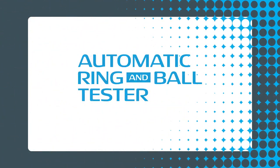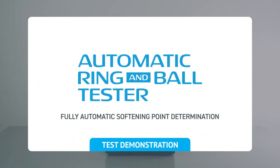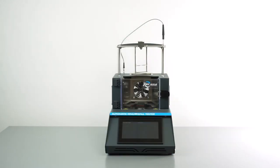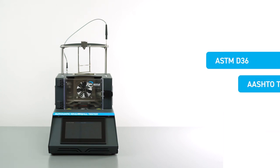How to perform a softening point test with IPC Global's automatic ring and ball apparatus. The procedure followed in this video refers to ASTM D36, AASHTO T53, and EN 1427.